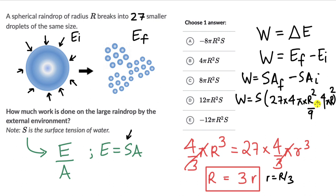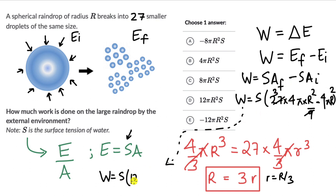So work equals S × (12πR² − 4πR²) = S × 8πR² = 8πR²S. That is option C.